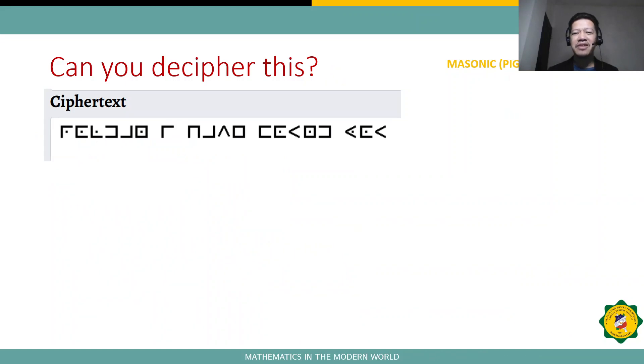Let's have an example. Can you decipher this ciphertext here? This ciphertext is being encoded using one type of cipher code. We call it the Masonic or Pigpen Cipher.